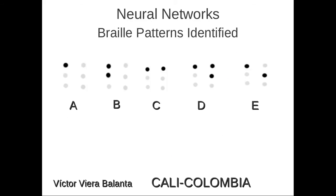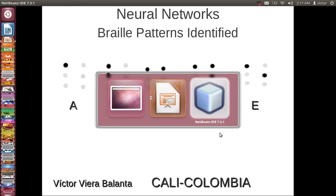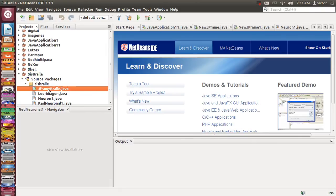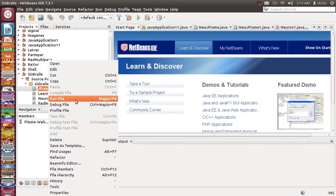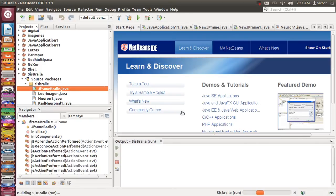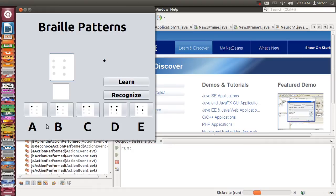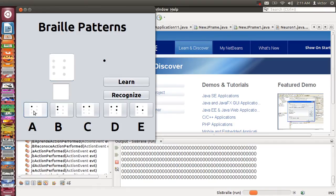And this is the Braille pattern for letters A, B, C, D, E. Let's see the program, how the neural network learns these patterns.